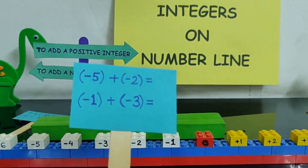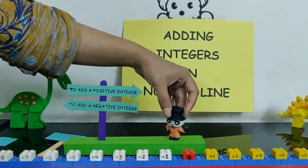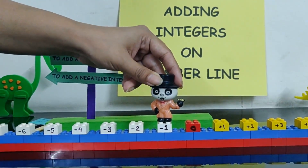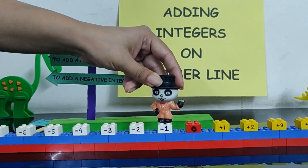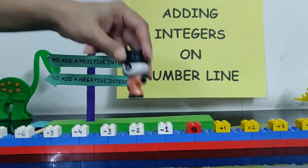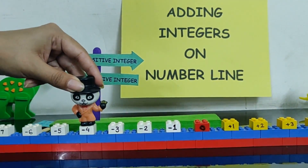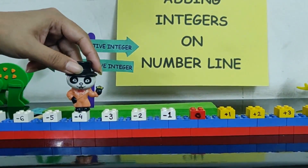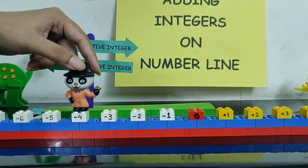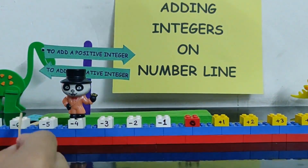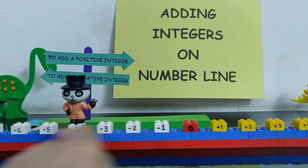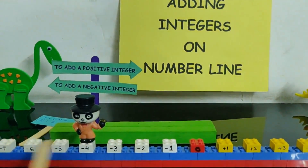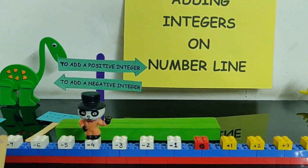The second example is minus 1 plus minus 3. We place Panda at minus 1 and we have to add minus 3. Since it is a negative number, we move towards the left: 1, 2, 3. The answer is minus 4. Whenever we add two negative numbers, Mr. Panda is only moving on the left side of 0, so the answer will always be a negative number.